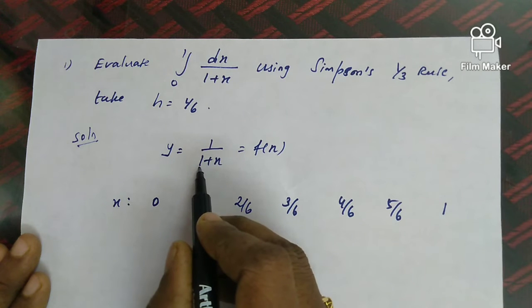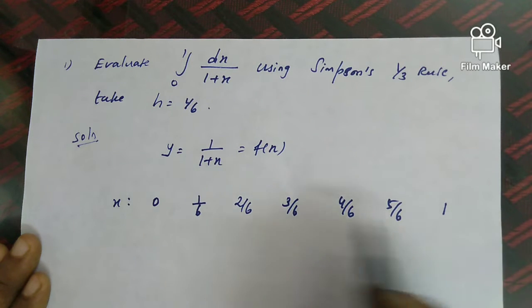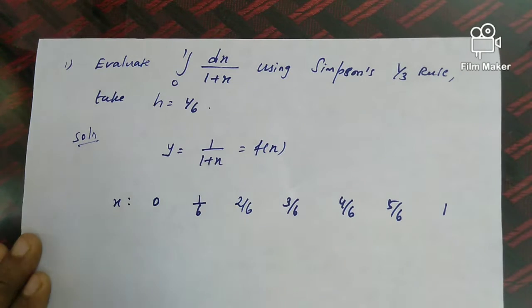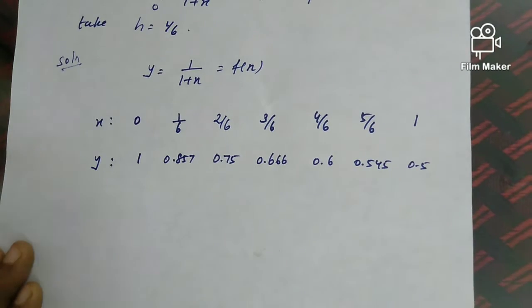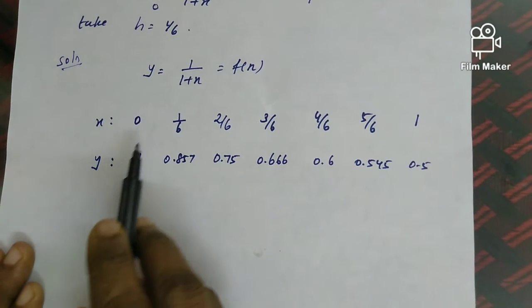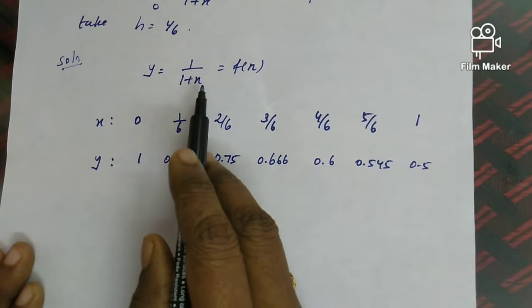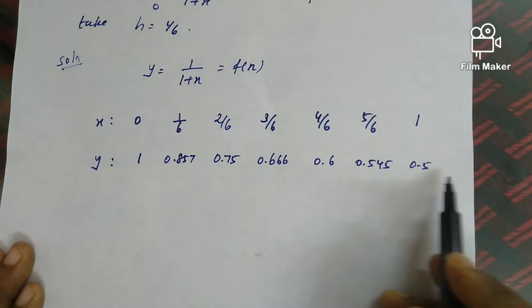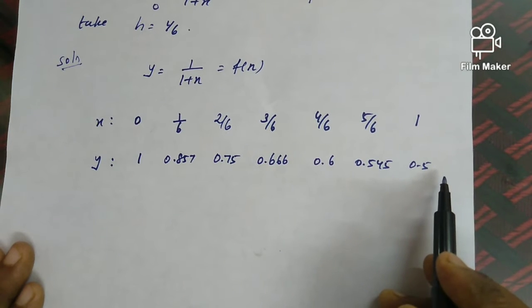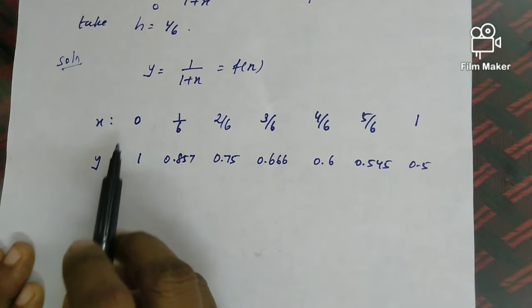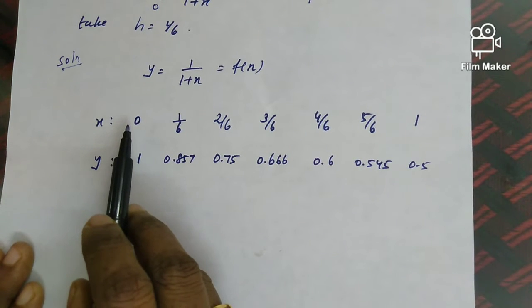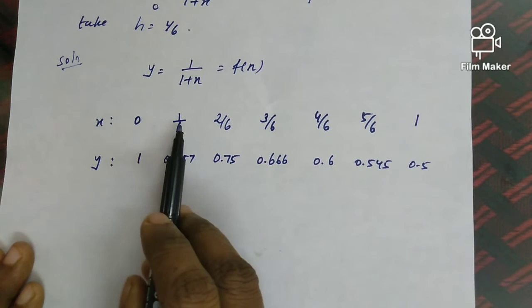We substitute y = 1/(1+x) for each x value. At x=0, y₀ = 1/(1+0). All corresponding y values y₀ through y₆ are calculated by substituting each x value into the formula.